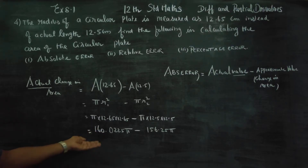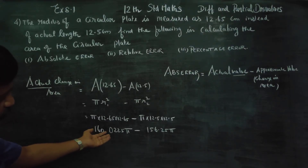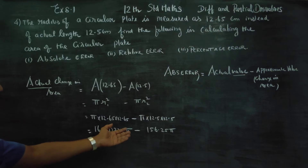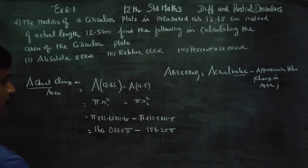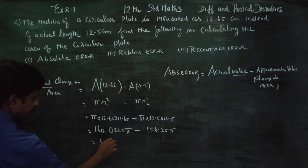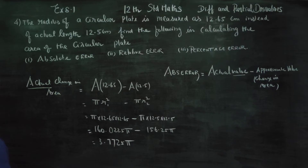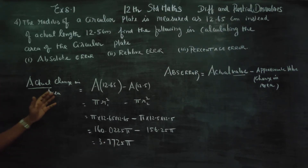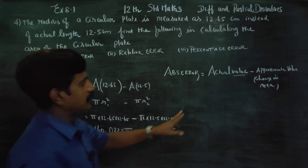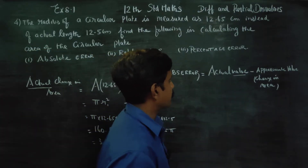12.65 squared is 160.0225, and 12.5 squared gives 156.25. So we get 160.0225π minus 156.25π, which equals 3.7725π. This is the actual change in area.